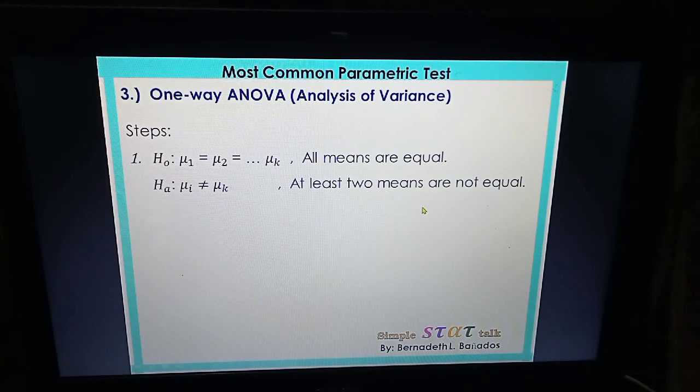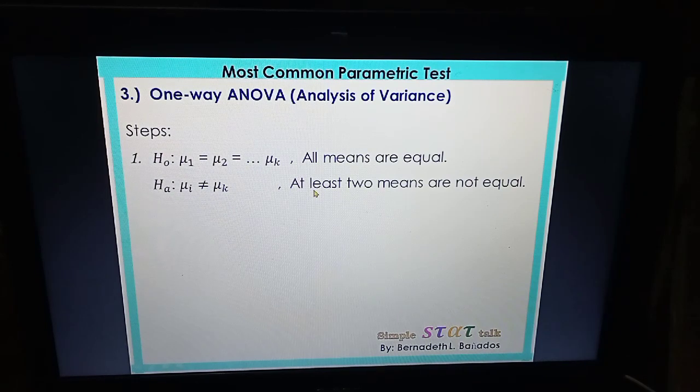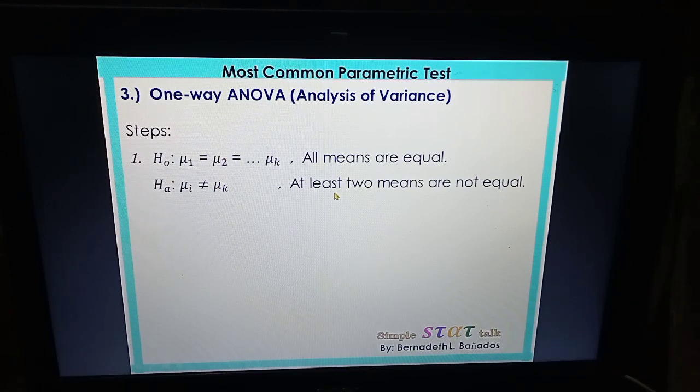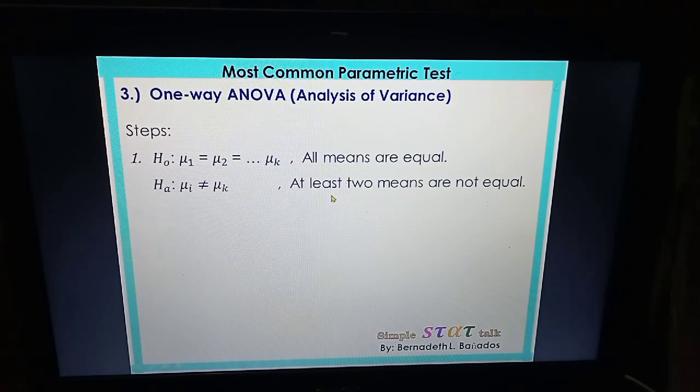In ANOVA, it only tells us that at least there are pair of means in which they are not equal, but it will not tell us as to which of the pairs are not equal. So if we wanted to know which pair, which two means are different, we are going to perform a post-hoc test.